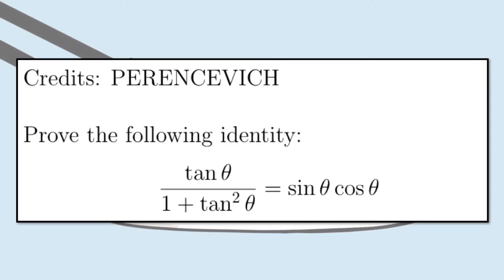Prove the following identity: tangent theta over 1 plus tangent squared theta equals sine theta times cosine theta.